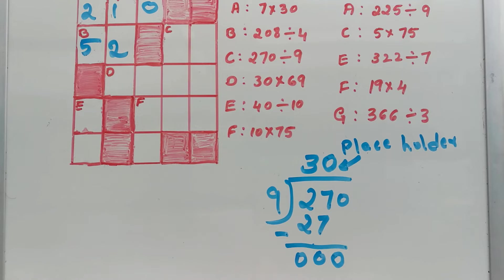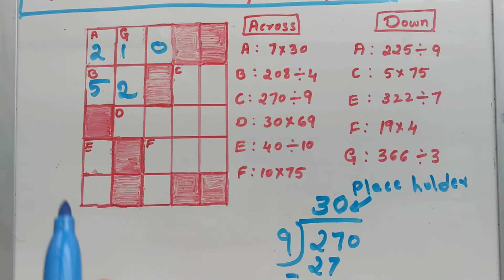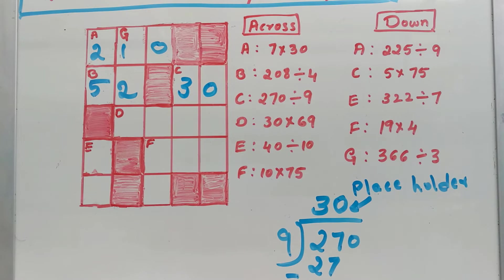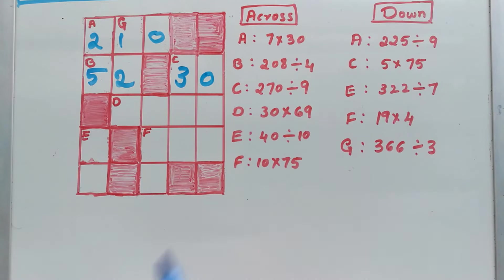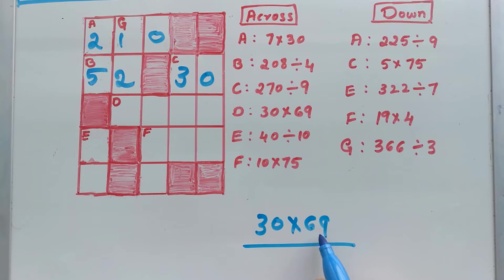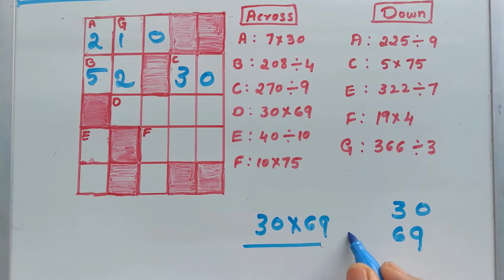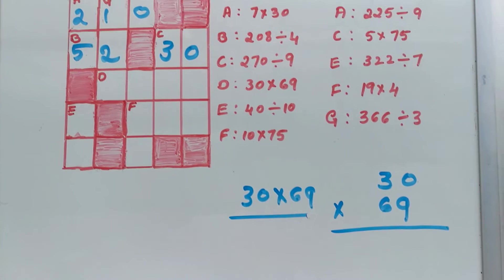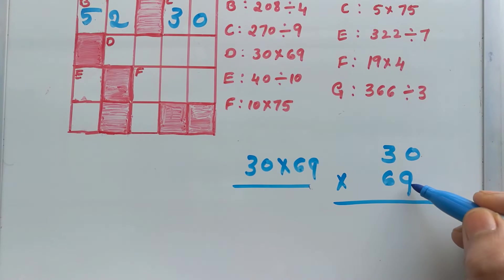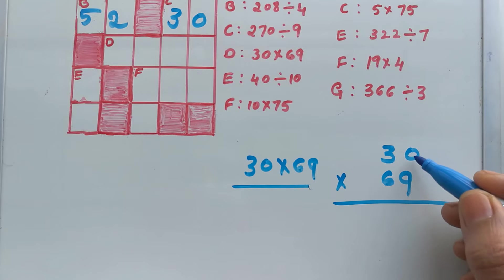For C, the answer is 30. Now D: 30 times 69, multiplication. First you have to multiply with 9. You can write it like this for your convenience: 30 times 69. First multiply units place of first number by units place of second number — 9 times 0 is 0.